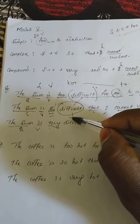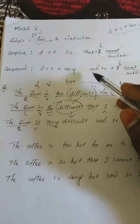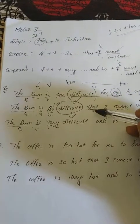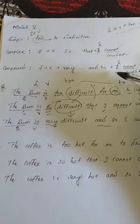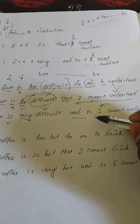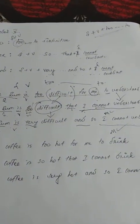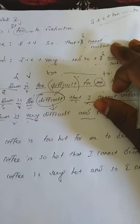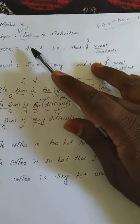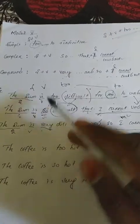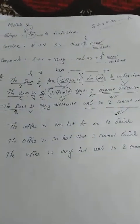To change into compound: keep subject 'the sum' and verb 'is', but replace 'so' with 'very', then 'difficult' comes as it is. Then remove 'that' and use 'and so' instead. The main clause 'I cannot understand' remains unchanged. The main clause will never get changed. Just memorize the formula and substitute it.